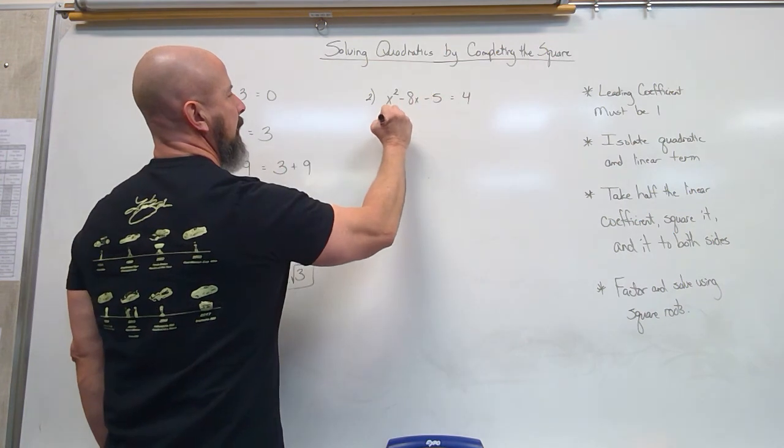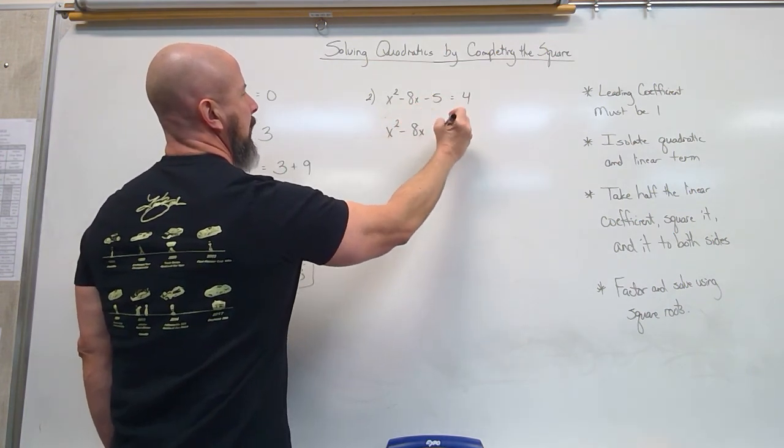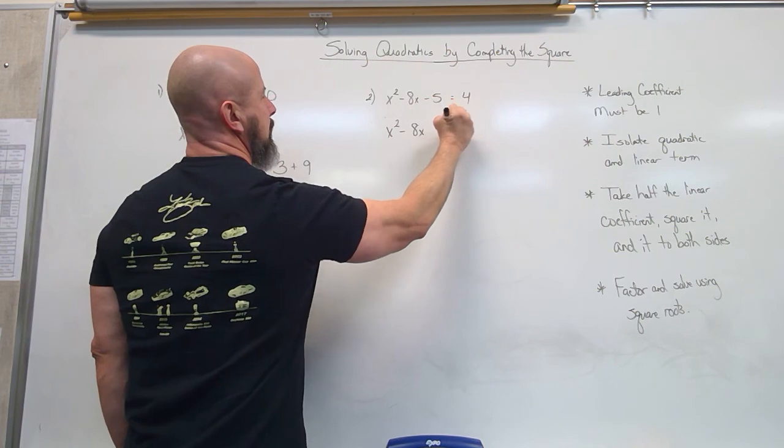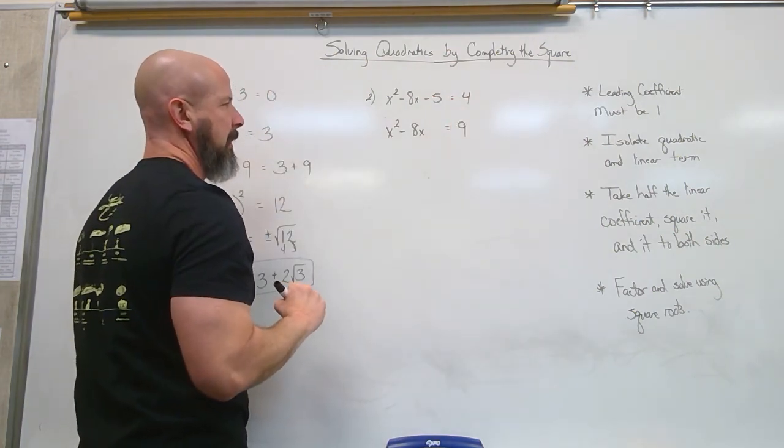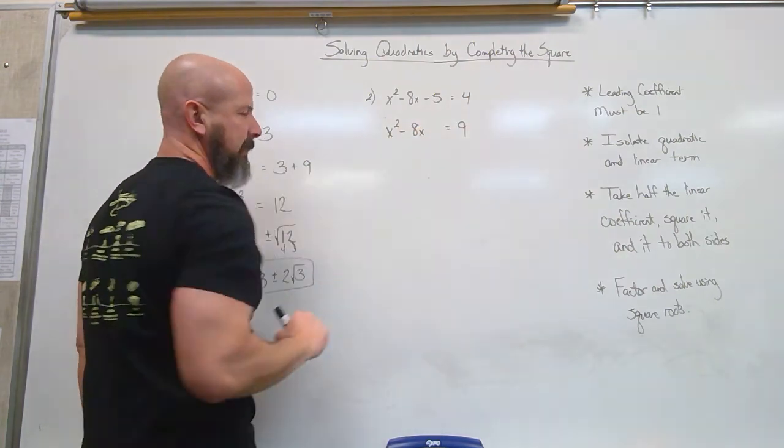Isolate quadratic and linear term. Okay, so I want to move the 5. x² minus 8x equals 9. 4 to 5 is 9, so I've got that.